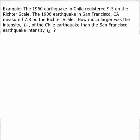Now let's look at the following example. The 1960 earthquake in Chile registered 9.5 on the Richter scale. The 1906 earthquake in San Francisco, California measured 7.8 on the Richter scale. How much larger was it?